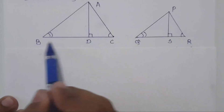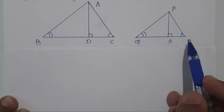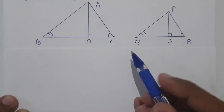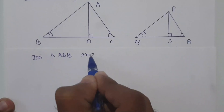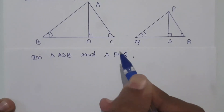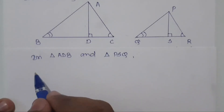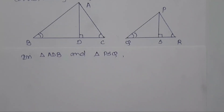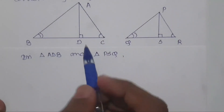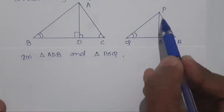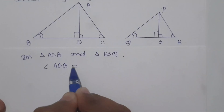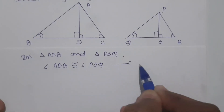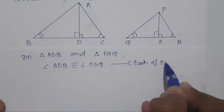Since AD is perpendicular to BC and PS is perpendicular to QR, we get two right angle triangles: triangle ADB and triangle PSQ. Consider triangles ADB and PSQ. Since AD is perpendicular to BC, angle ADB is 90 degrees; similarly angle PSQ is also 90 degrees. So angle ADB is congruent to angle PSQ, because each measures 90 degrees.